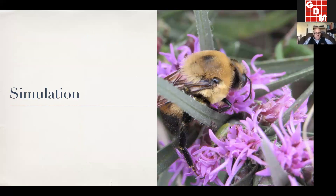Here is a picture of a bumblebee on what's called blazing star or gay feather. This is one of the seeds I put in that experiment — it turns out to germinate quite well, which I'm happy about because I really like this flower. There are some commercial varieties available if you want to put native flowers in your garden. I put this picture in just to be entertaining.